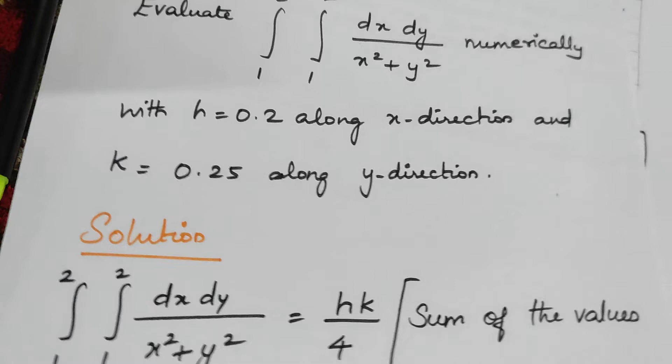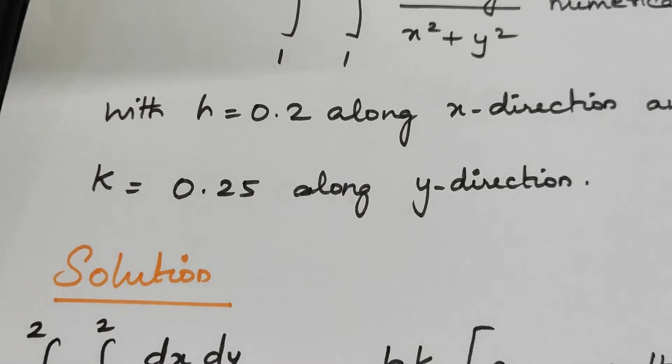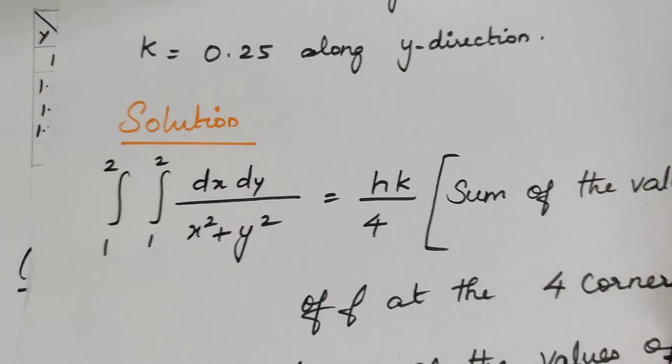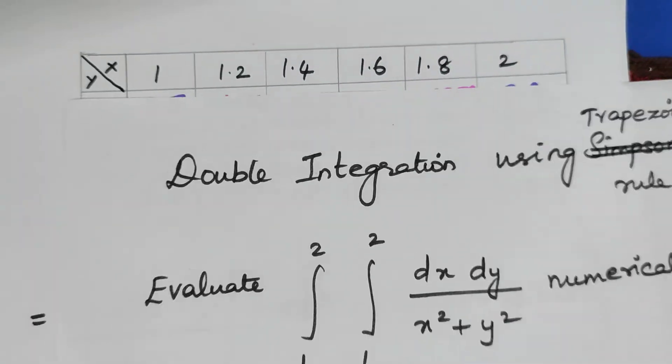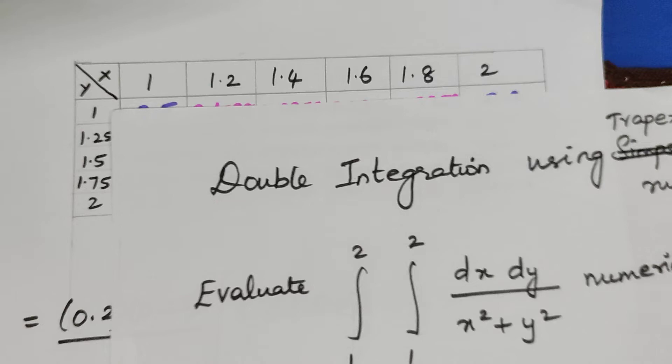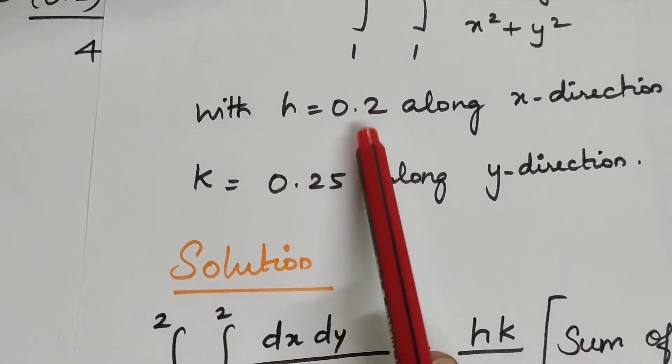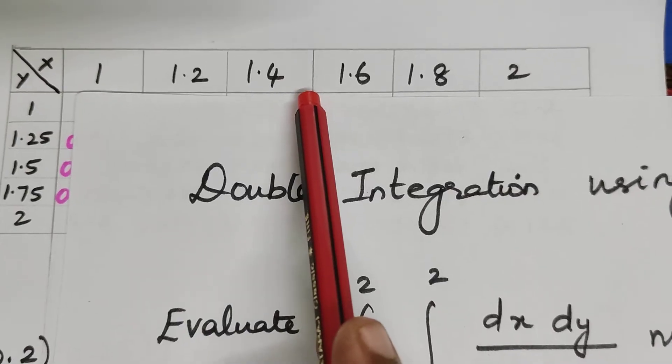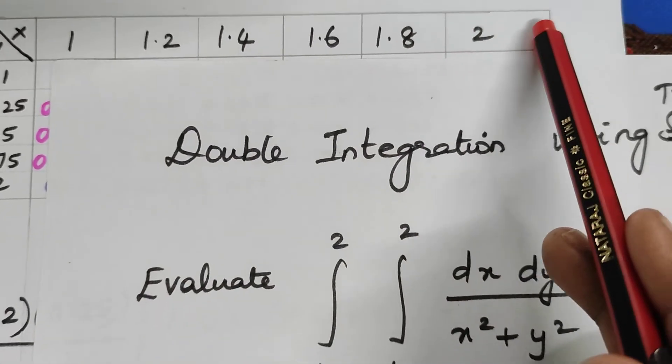Let us get into the solution of this particular problem. H is taking an incremented value of 0.2 and K is taking the incremented value of 0.25. I have drawn the table for you. X values are varying from 1 to 2 and Y values are varying from 1 to 2. X should vary with the H increment, which is 0.2. The first value is the lower limit 1 and the incremented values are 1.2, 1.4, 1.6, 1.8, and 2. These are increasing in 0.2 values.